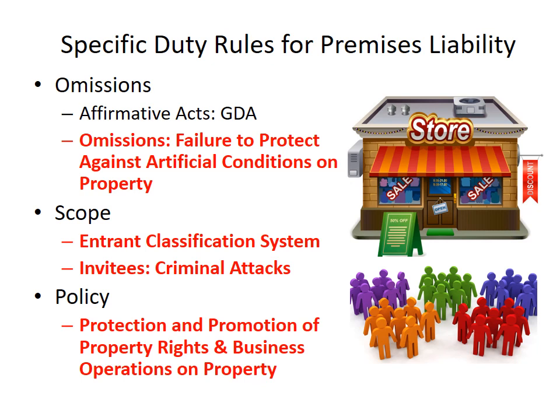The limits will apply where there is some failure to act on the part of the property owner, and by virtue of that failure to act, someone gets injured. In these omission cases, it's important to distinguish between a natural condition on the property and an artificial condition. Generally speaking, the property owner is not responsible for providing protections against natural conditions — only for artificial or man-made conditions on the property.